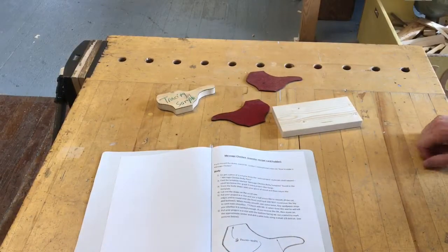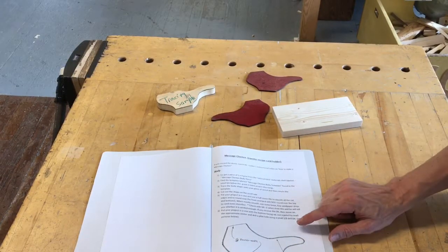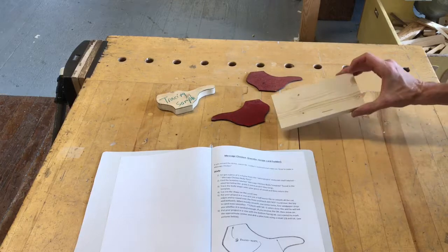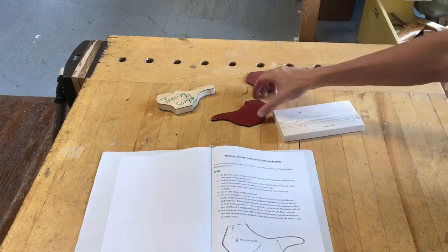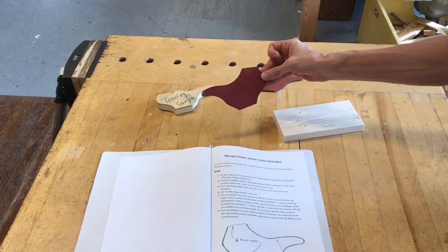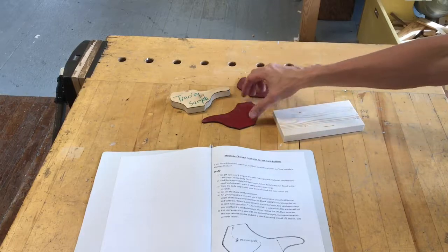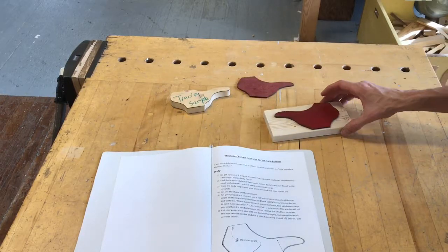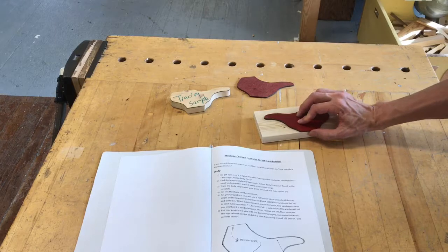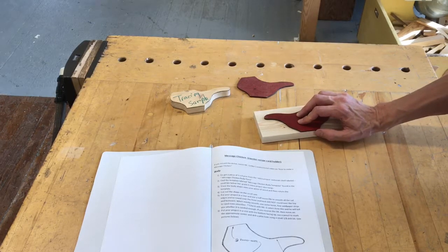Hi there and welcome to another grade 6 extra project tutorial. Today we're going to make the rooster recipe card holder, or as I like to call it, the message chicken. The first thing you're going to do, following along with the instructions in the grade 6 extra project booklet, is get a piece of 1x4 pine and choose one of the body tracing samples. There are a few different shapes, all slightly different. You just pick whichever one you like the most and place that on your piece of pine and trace around it with a nice dark line that is easily seen.